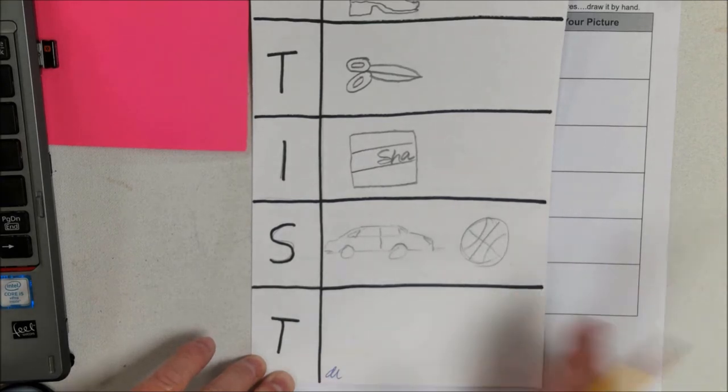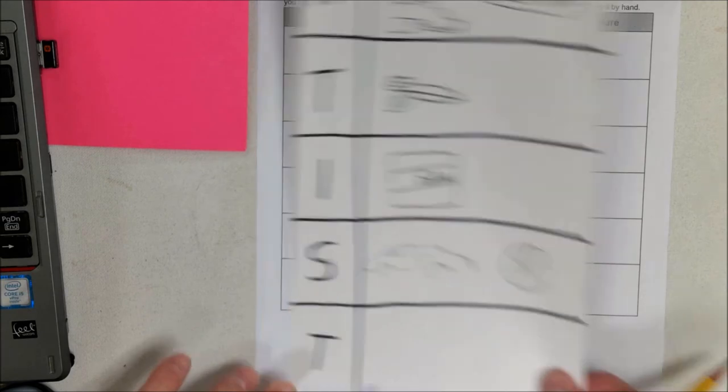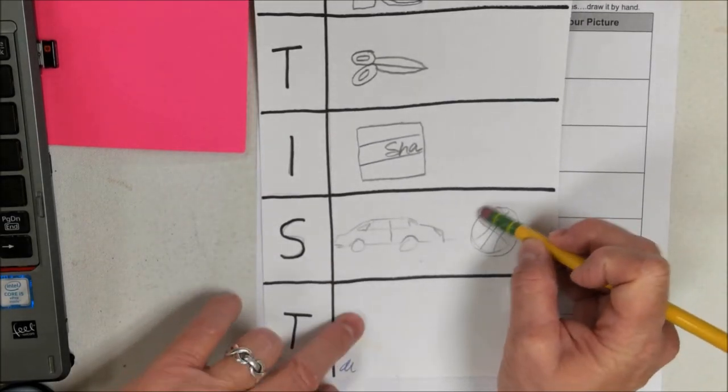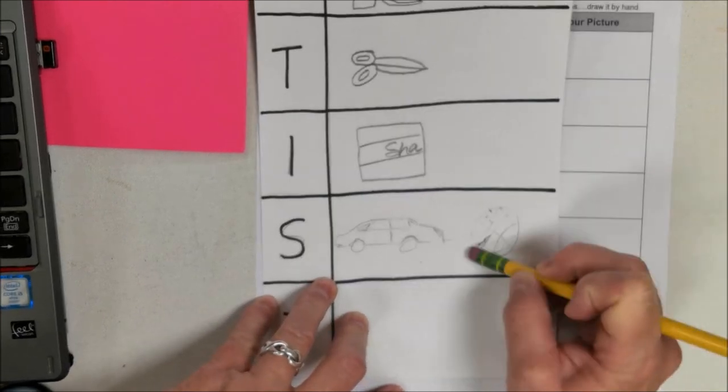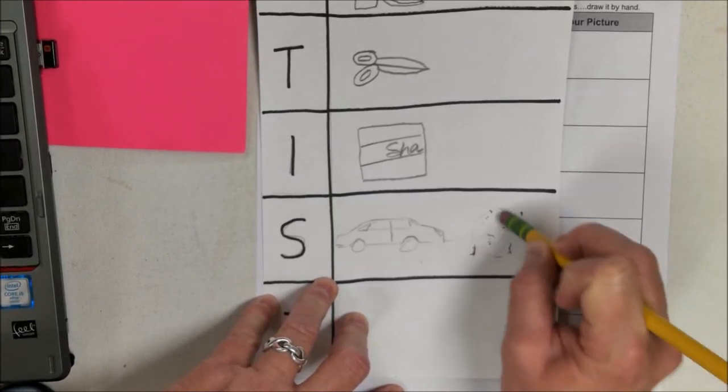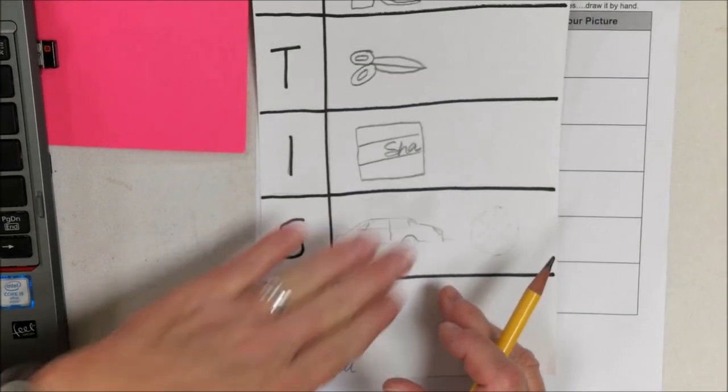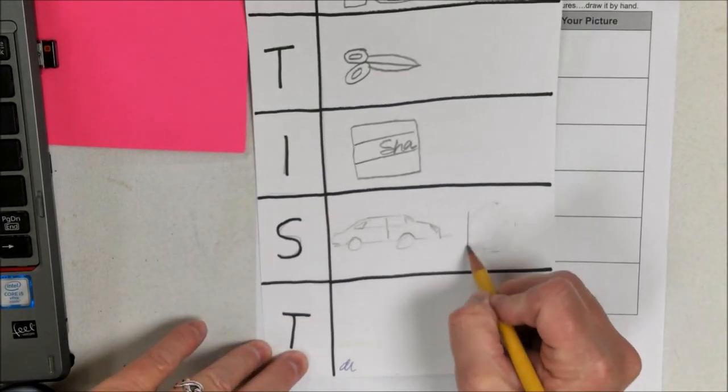And then, oh no, I messed up, oopsie. So on Kindergarten through second grade, S is something that's square. A sketch was for the older kids, so I could just draw a box, something that's square.